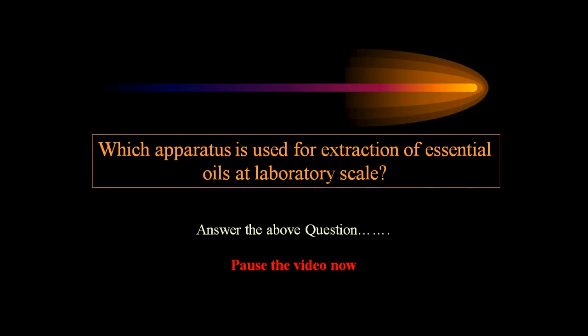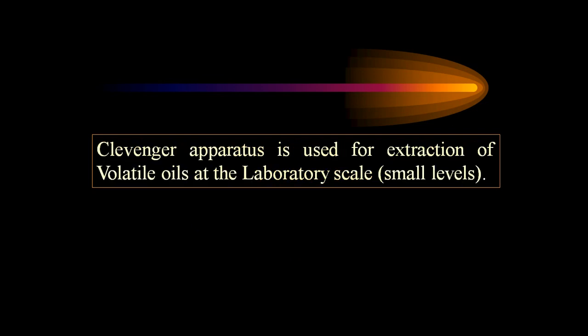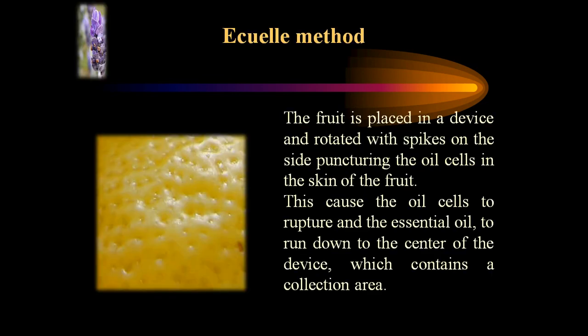Coming to the question: which apparatus is used for extraction of essential oil or volatile oil at laboratory scale? Hit pause the video for a minute and try to answer the question. Here is the answer: the expression apparatus is used for extraction of volatile oils at laboratory scale. In the cold-pressing method, also called the expression method, the fruit is placed in a device and rotated with spikes on the side, puncturing the oil cells in the skin of the fruit. This causes the oil cells to rupture and the essential oil to collect in the center of the device, which contains a collection area.